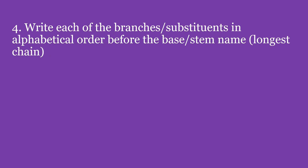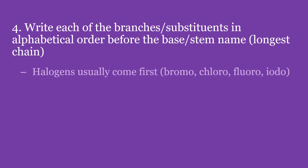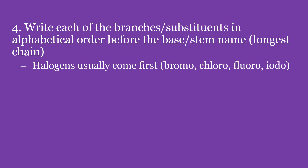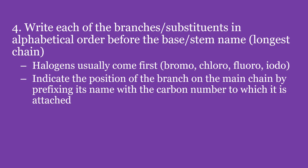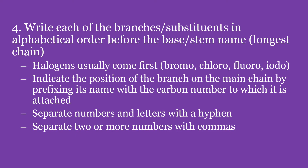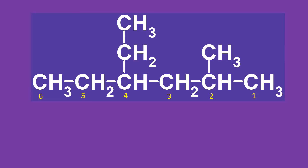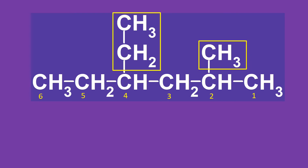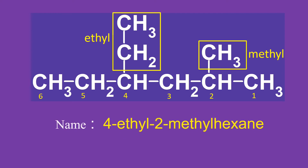Rule 4: Write each of the branches or substituents in alphabetical order before the base or stem name. Halogens usually come first: bromo, chloro, fluoro, and iodo. Indicate the position of the branch on the main chain by prefixing its name with the carbon number to which it is attached. Separate numbers and letters with a hyphen, and separate two or more numbers with commas. For example, the parent chain is a 6-carbon alkane named hexane. Along the parent chain, there are 2 alkyl groups attached to carbon number 2 and carbon number 4 — a methyl at carbon 2 and an ethyl at carbon 4. Therefore, the name of the structure is 4-ethyl-2-methylhexane.